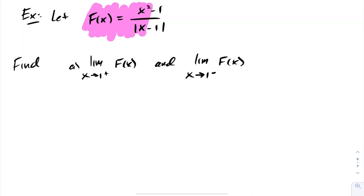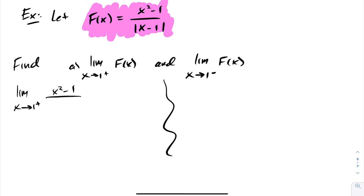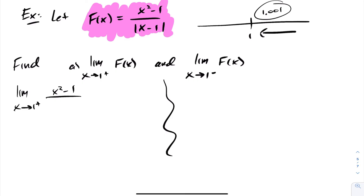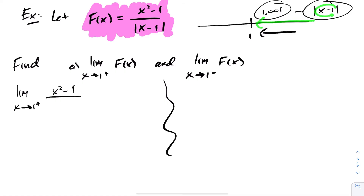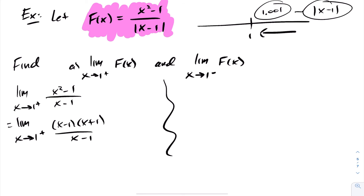For the next function, they want us to evaluate the limit as I approach 1 from the right and left for (x² - 1) / |x - 1|. As I approach 1 from the right-hand side, values like 1.001 make (x - 1) positive, so I can drop the absolute value sign. This becomes (x² - 1) / (x - 1). Using difference of squares and cancelling, I get the limit as x approaches 1 from the right of (x + 1), which equals 2.